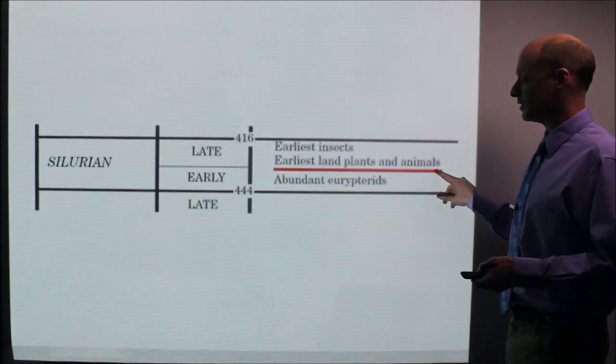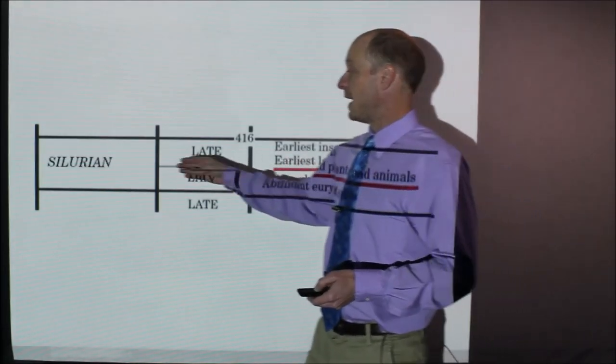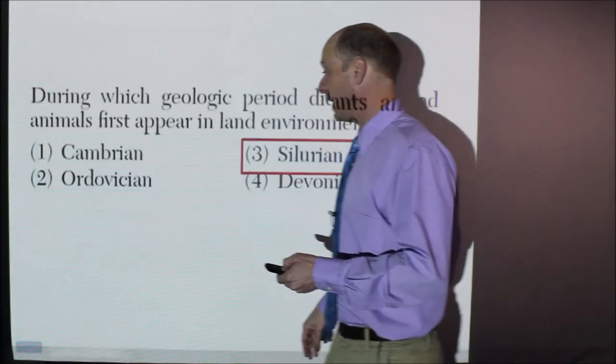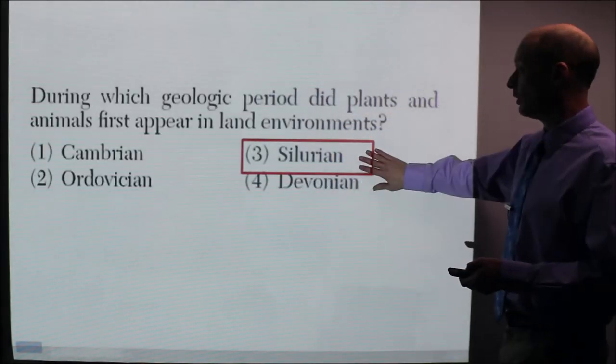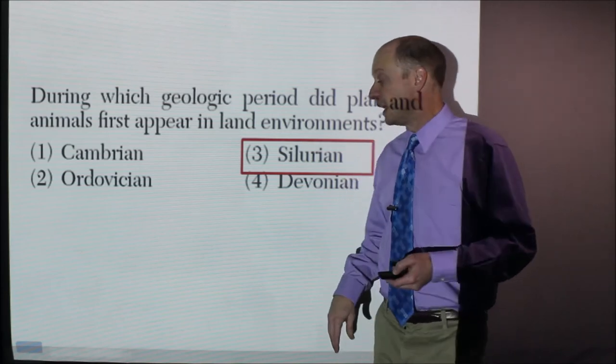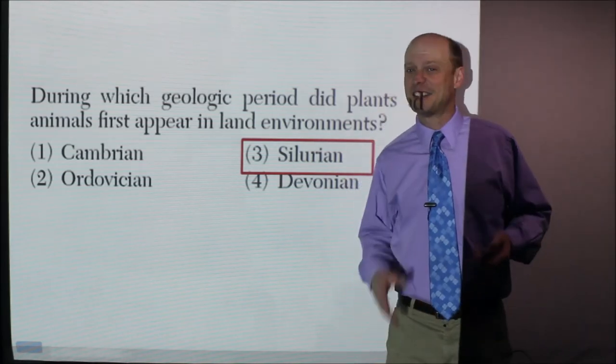I looked for it and it's right here. Let's zoom in—it says earliest land plants and animals, and we're talking about the Silurian. So the answer here is the Silurian period. And that's how you do that.